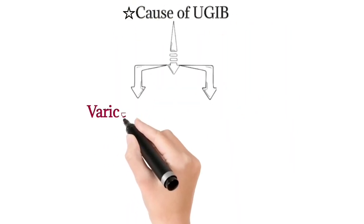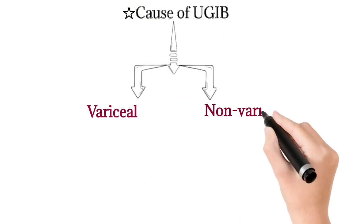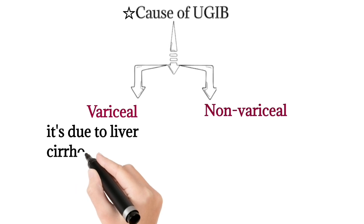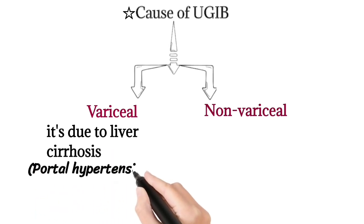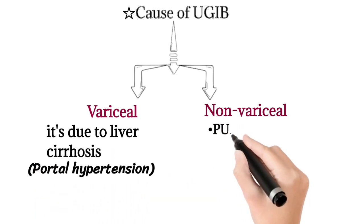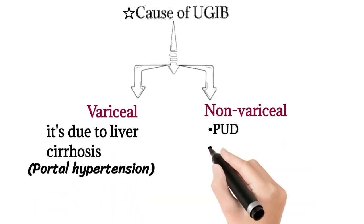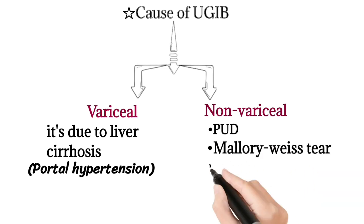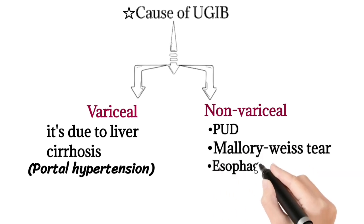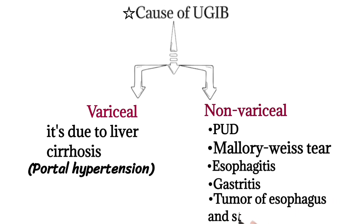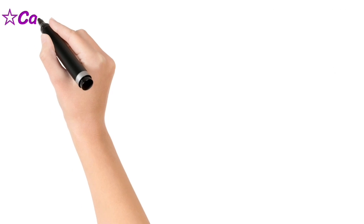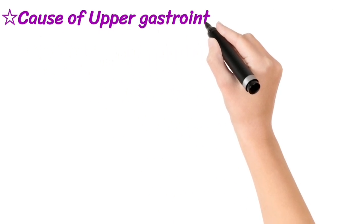The causes of upper GI bleeding are divided into visceral and non-visceral causes. Visceral causes are due to liver cirrhosis, which leads to portal hypertension. Non-visceral causes include Mallory-Weiss tear, esophagitis, gastritis, and tumors of the esophagus and stomach.